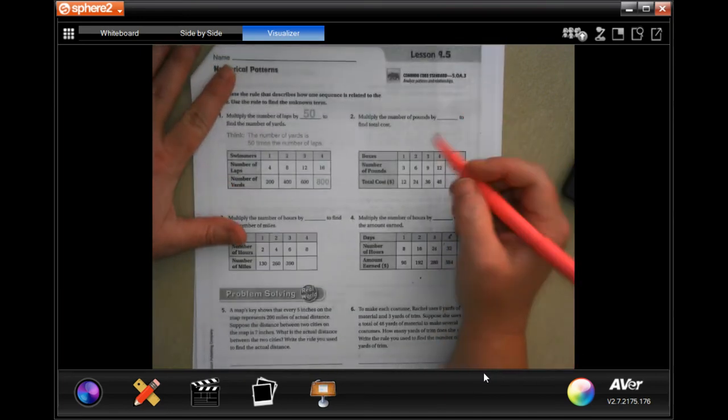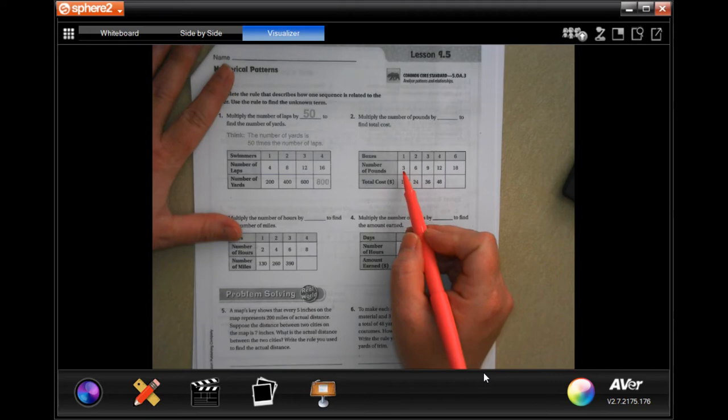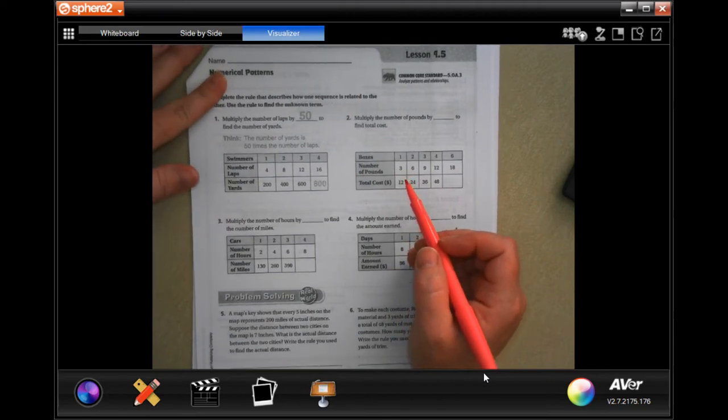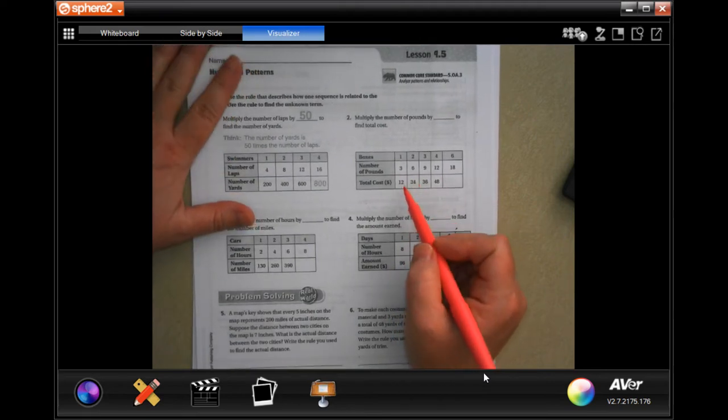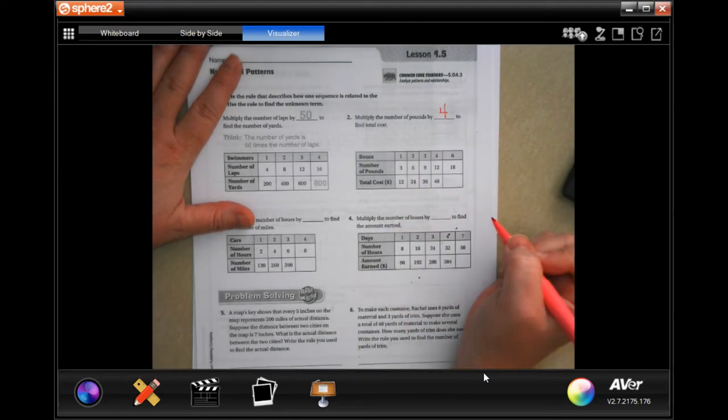Well, the number of pounds, that's three right there. Three times what is 12? Well, we multiplied it by four to get 12. Three times four is 12.